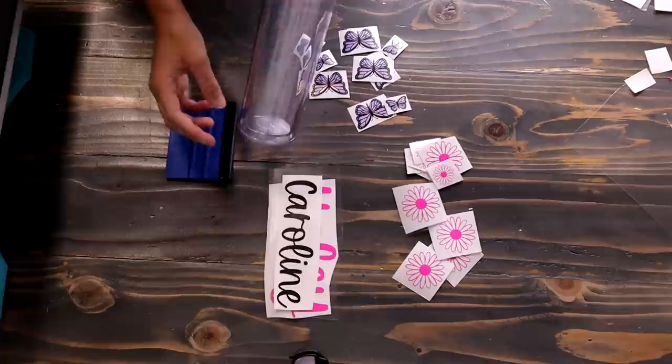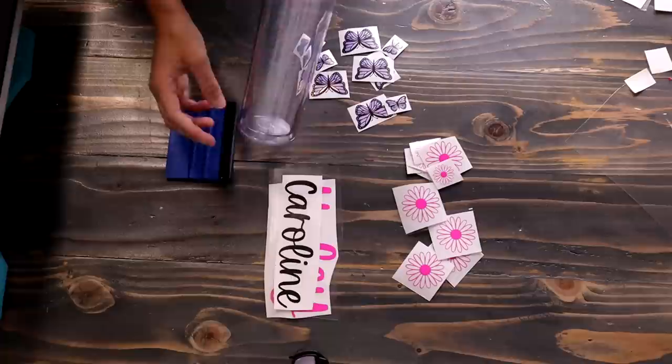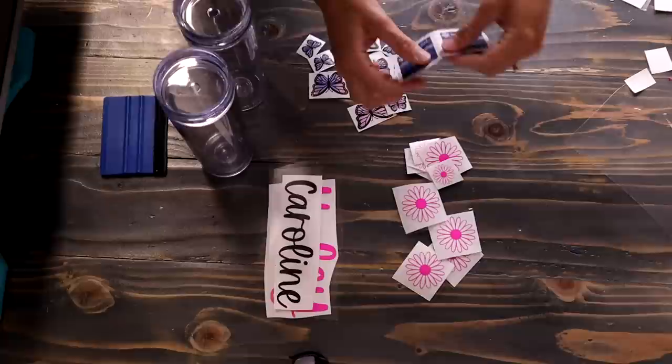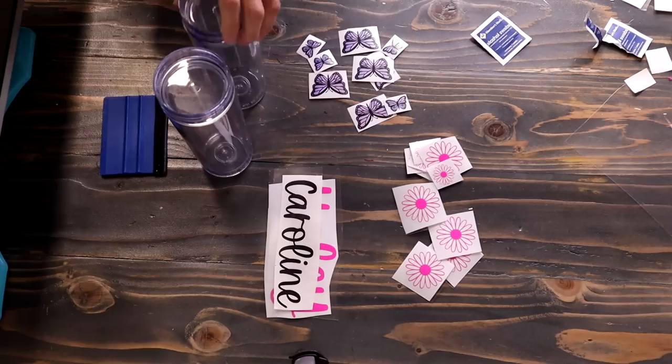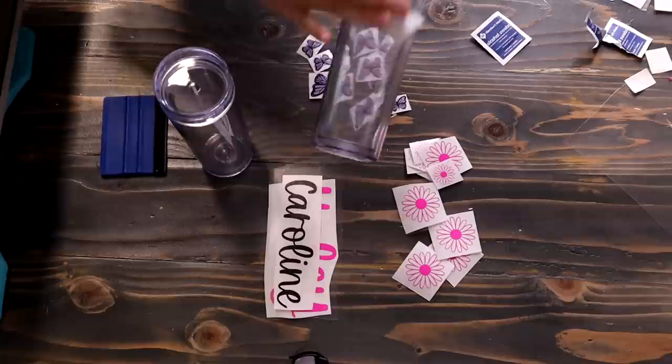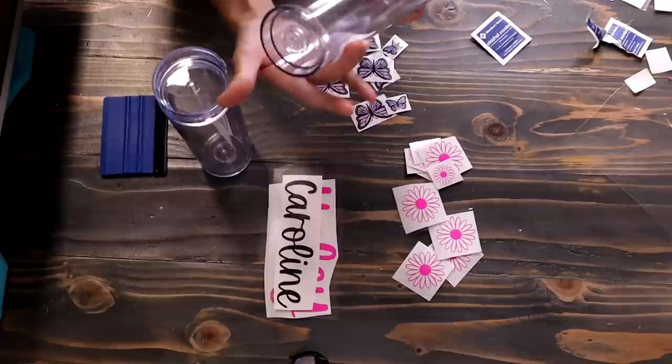So now we're just going to get our tumblers. These are 20 ounce tumblers and I'm going to clean them off with rubbing alcohol first. I'm just going to go ahead and use these alcohol swabs that I have, but you can totally just use regular rubbing alcohol and a paper towel and clean your surface off really well. Alcohol on your surface is honestly key to a good adhere for your vinyl.